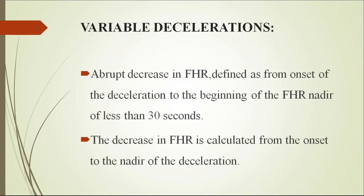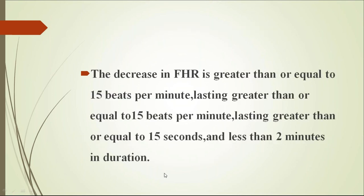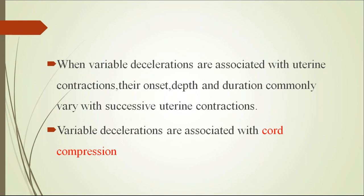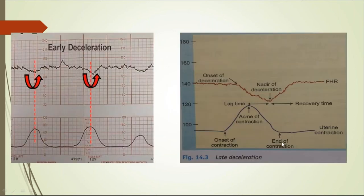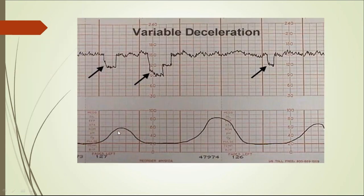Variable deceleration: these decelerations have no specific relationship with uterine contractions. The decrease in fetal heart rate is calculated from onset to nadir. Variable decelerations represent cord compression. When variable decelerations are associated with uterine contractions and show no specific pattern corresponding to contraction timing, they are called variable decelerations and are seen in cord compression.